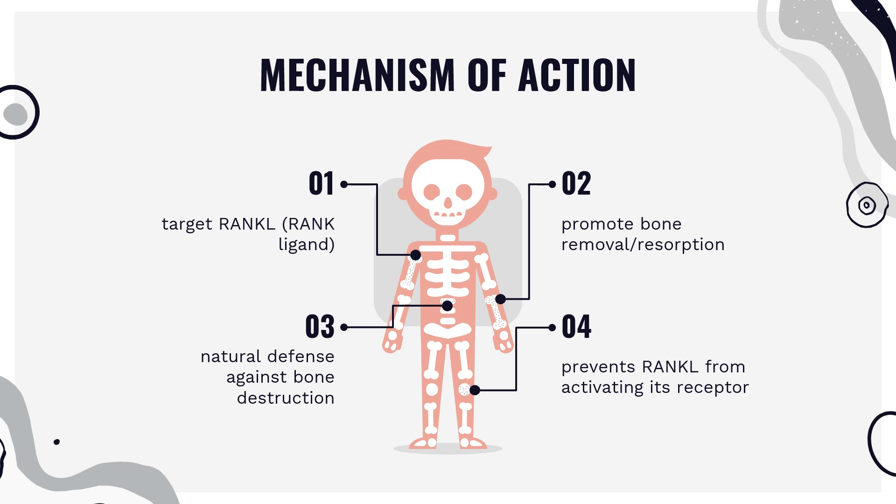Mechanism of Action: Denosumab is designed to target RANKL (rank ligand), a protein that acts as the primary signal to promote bone removal/resorption. In many bone loss conditions, RANKL overwhelms the body's natural defense against bone destruction. Denosumab prevents RANKL from activating its receptor, RANK, on the surface of osteoclasts and their precursors. Prevention of the RANKL/RANK interaction inhibits osteoclast formation, function, and survival, thereby decreasing bone resorption and increasing bone mass and strength in both cortical and trabecular bone.